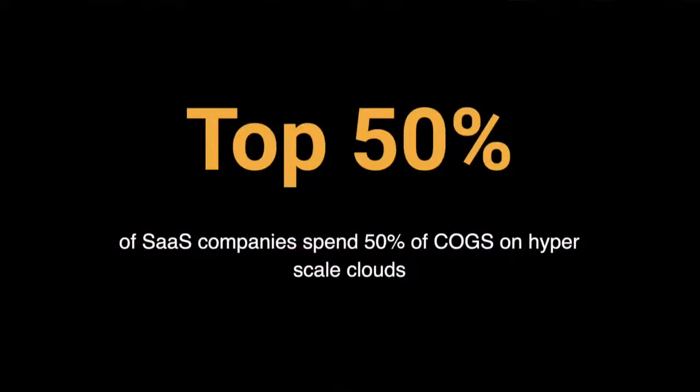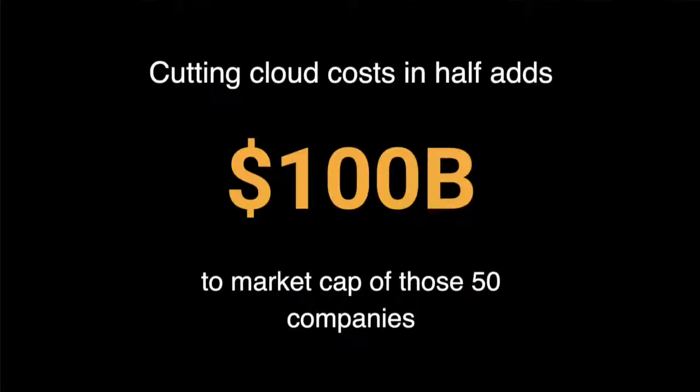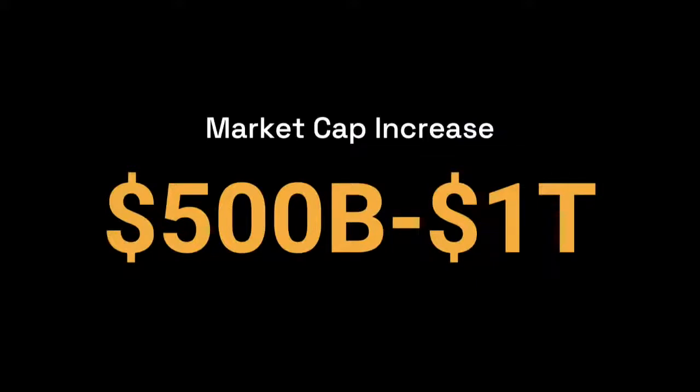Across those 50 companies, on average 50% of their COGS is cloud. And the second result: if you reduce that by half — however you decide to do it, whether you optimize your code, repatriate some workloads, whatever — it increases the share price across those 50 companies by about 100 billion dollars. If you extrapolate those results to the industry, it's a 500 billion to a trillion dollar problem in market cap being captured by the cloud.